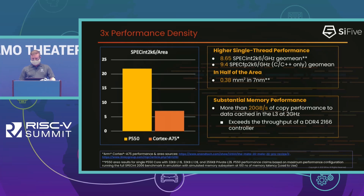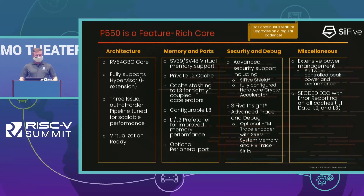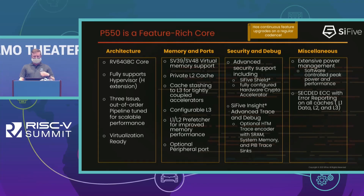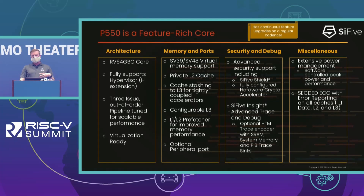The P550 is able to sustain up to more than 20 gigabytes per second copy performance through the L3. In terms of other architectural features, the P550 supports RV64GBC, which means it supports memory atomics, hardware multiply/divide, and the B bit manipulation extensions. The July release of P550 did not support the hypervisor extension, but the follow-on release coming up in the near future will support hardware virtualization through the hypervisor extension.